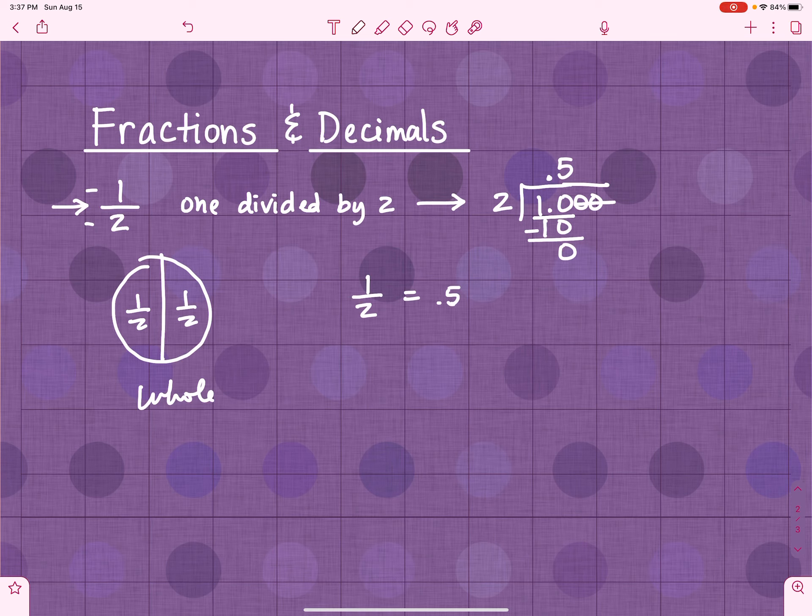Anytime you see a decimal, you can also think of that as over ten. So if I want to write 0.5 as a fraction, just looking at that, I can go, well, I know that that's five over ten. What does that reduce to? It reduces to one half. I know, it's exciting.